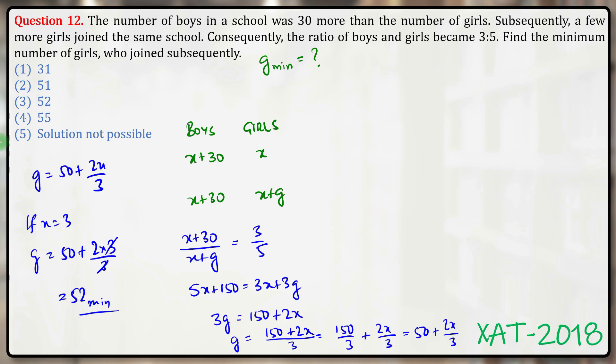So if x is equal to 3, then g is equal to 50 plus 52—minimum possible value—and that should be the answer. Answer option 3 is the correct answer.